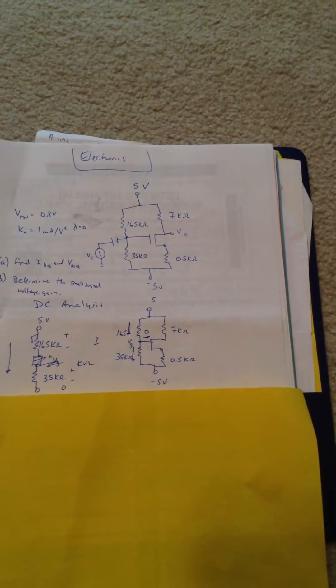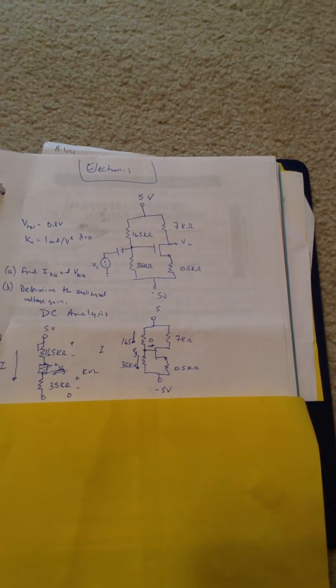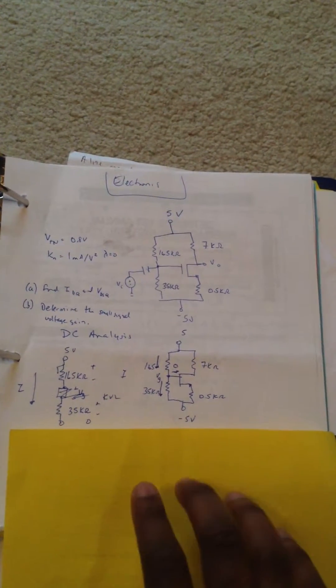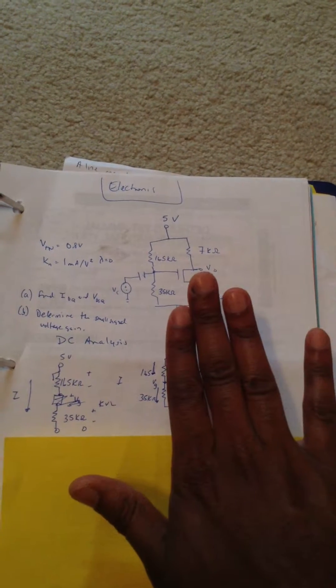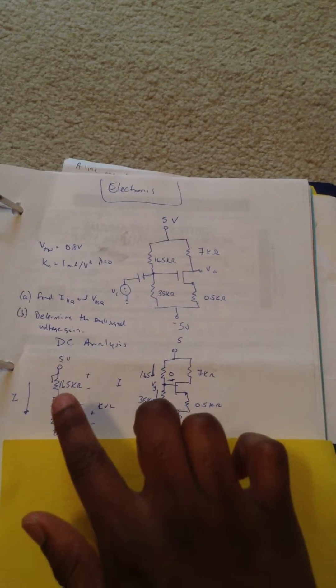We know that there's no current going inside the gate. So the current on this side of the leg is going to be the same. So we can break this into a DC circuit, which I did here.